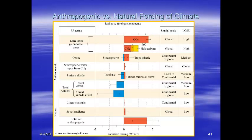Here we see the radiative forcing components, their timescale, their effect in radiative forcing in watts per meter squared, and their spatial scale. For example, long-lived greenhouse gases have a global spatial scale. Solar irradiance is also global but has considerably less effect. Linear contrails — clouds formed from aircraft exhaust — can be continental in scale and have a relatively low impact.